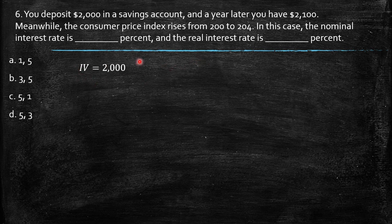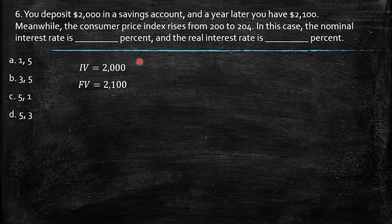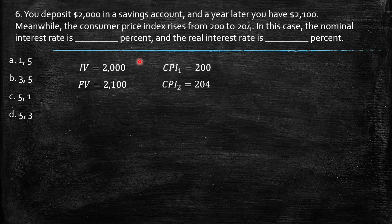You know that CPI 1 is 200 and CPI 2 is 204. You know that you can get the inflation with the change of CPI, which is provided by CPI 2 minus CPI 1 over CPI 1.